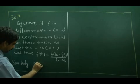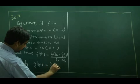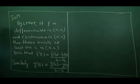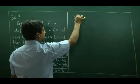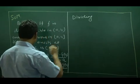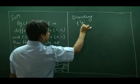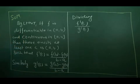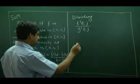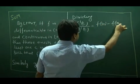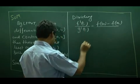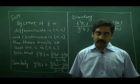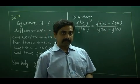Similarly, g'(c) is equal to g(b) minus g(a) upon b minus a. Dividing these two expressions, the (b minus a) terms cancel out, so we get f'(c) upon g'(c) equal to f(b) minus f(a) upon g(b) minus g(a).